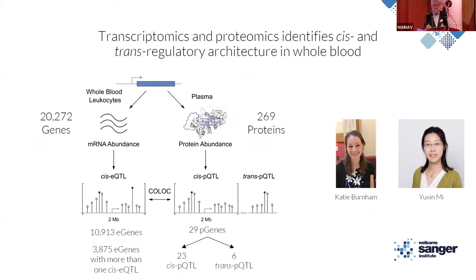For the pQTL, we took a genome-wide approach, testing every SNP genome-wide. For the 269 proteins that we had, we categorized any identified pQTL into either cis or trans based on their position in the genome. We identified 29 proteins that had pQTL — each protein had only one pQTL — 23 were in cis and 6 were in trans.